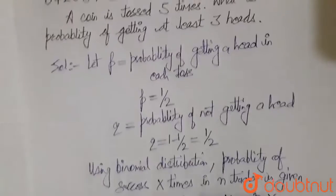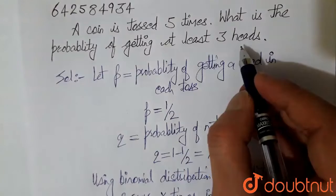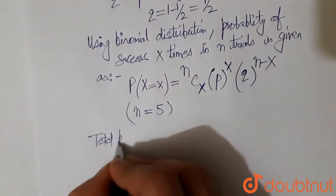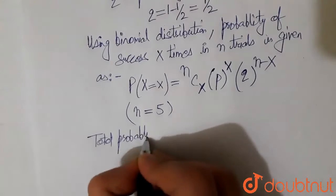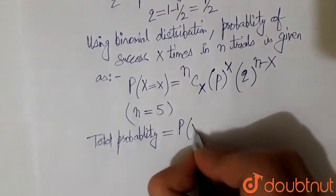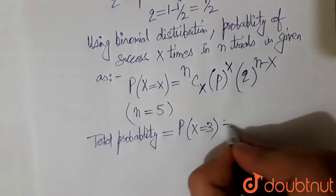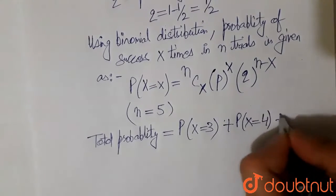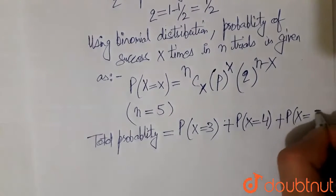So total probability becomes... at least 3 heads means probability of 3, or more than 3, that is probability of 4 heads plus probability of 5 heads.